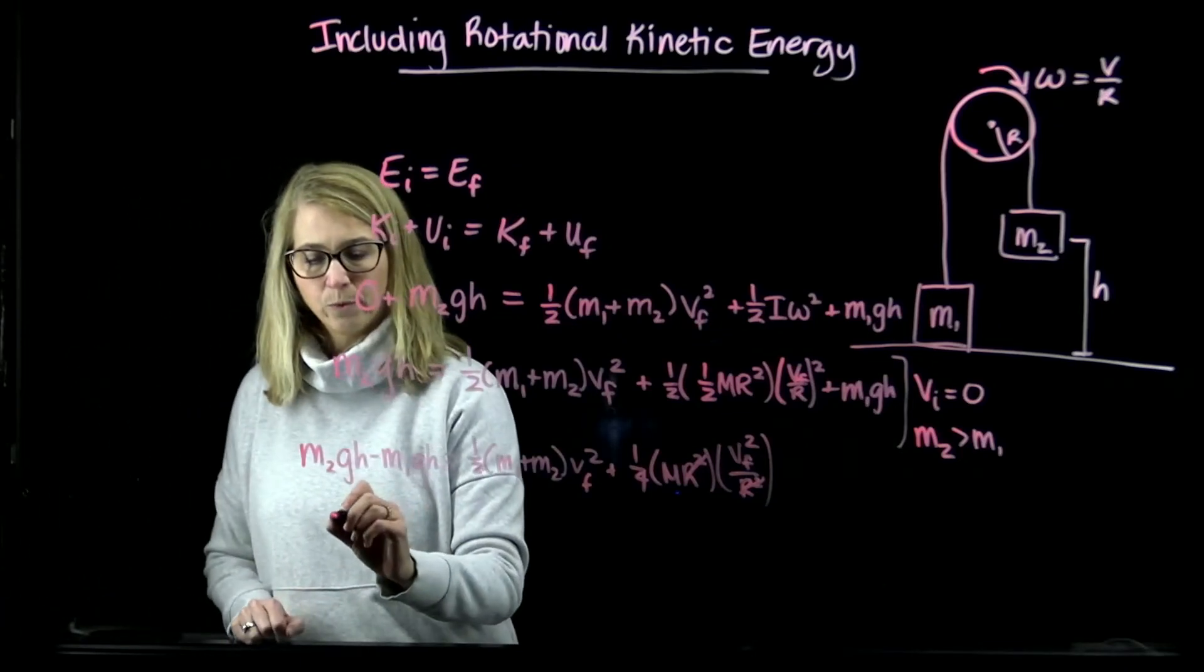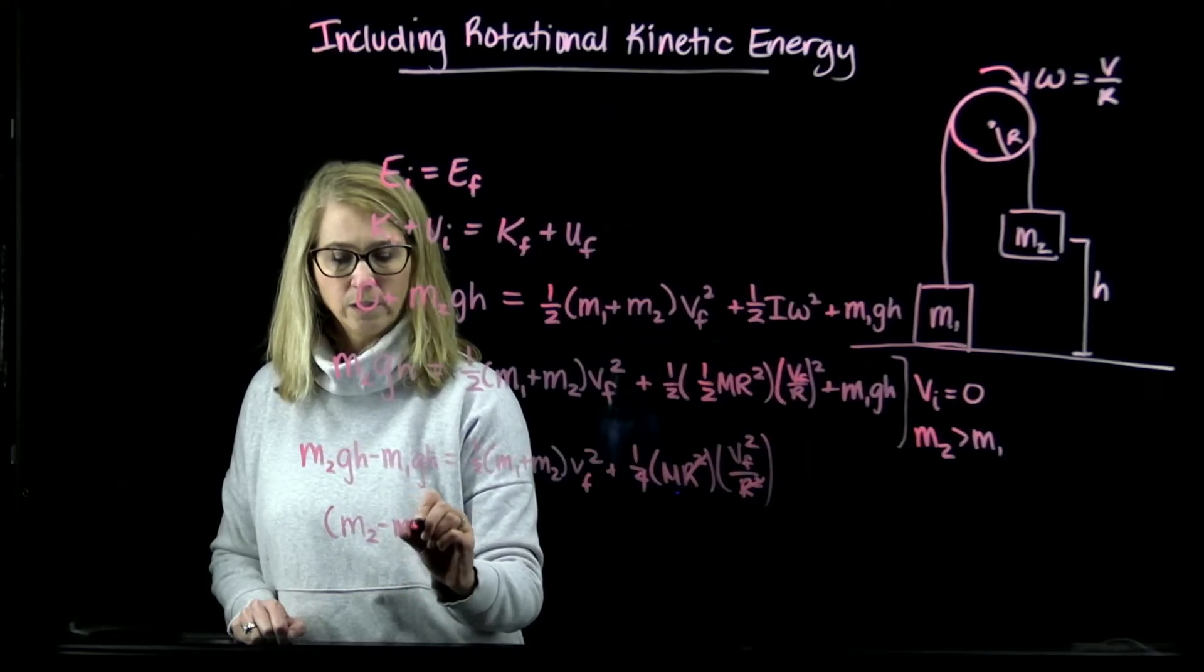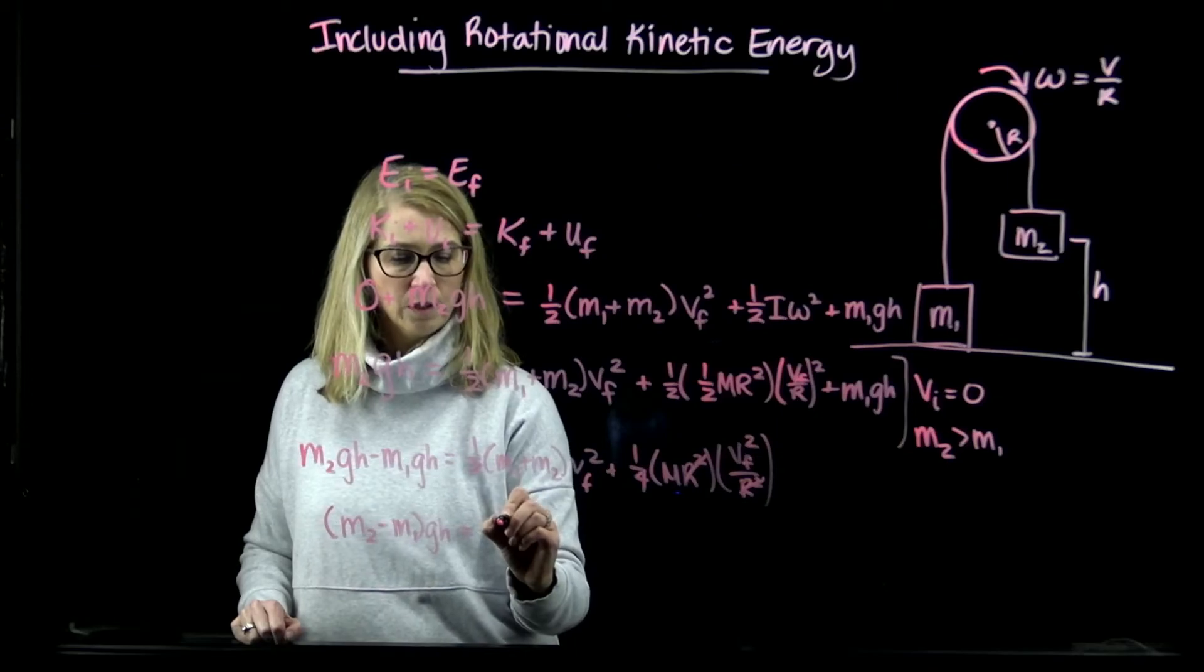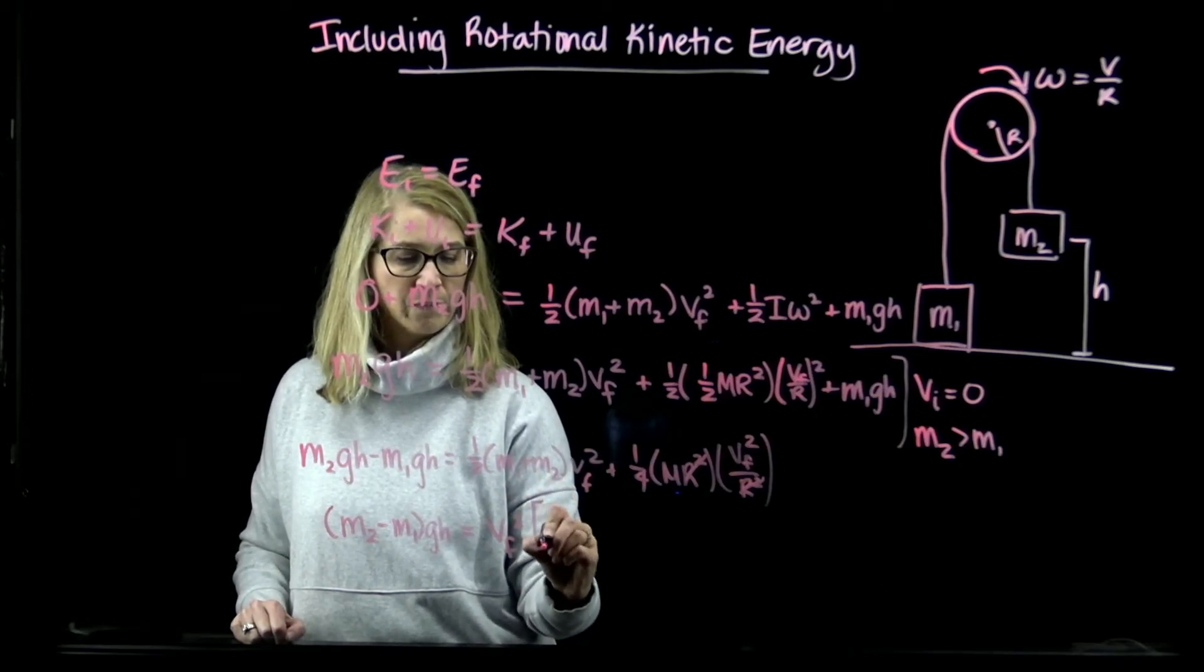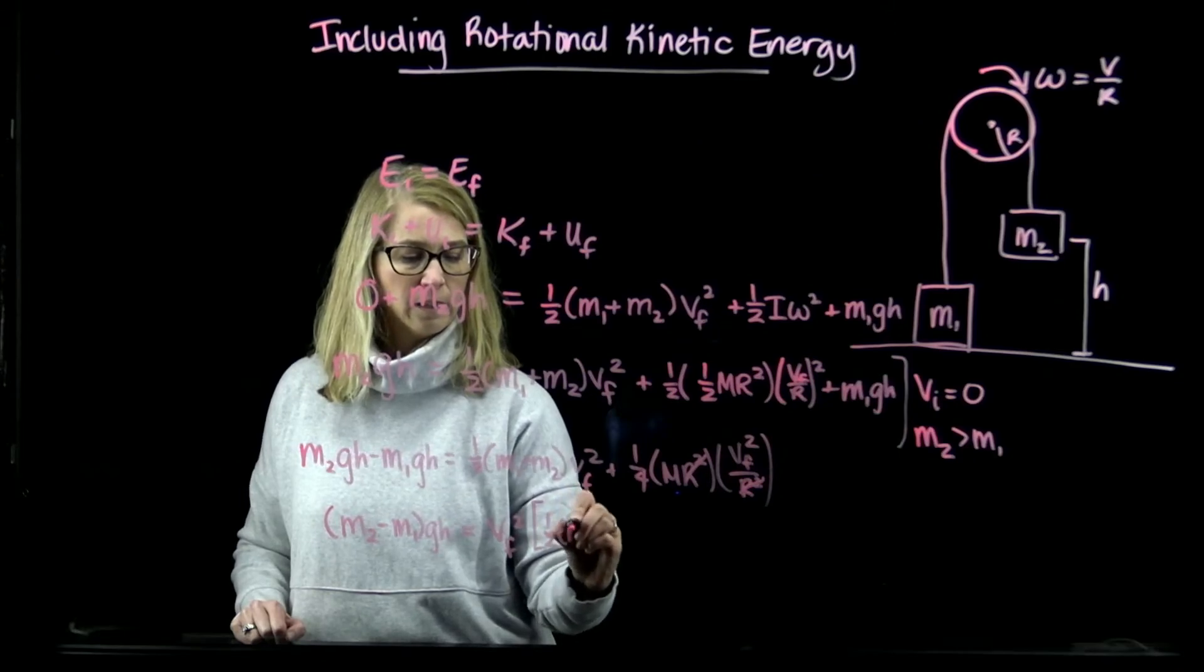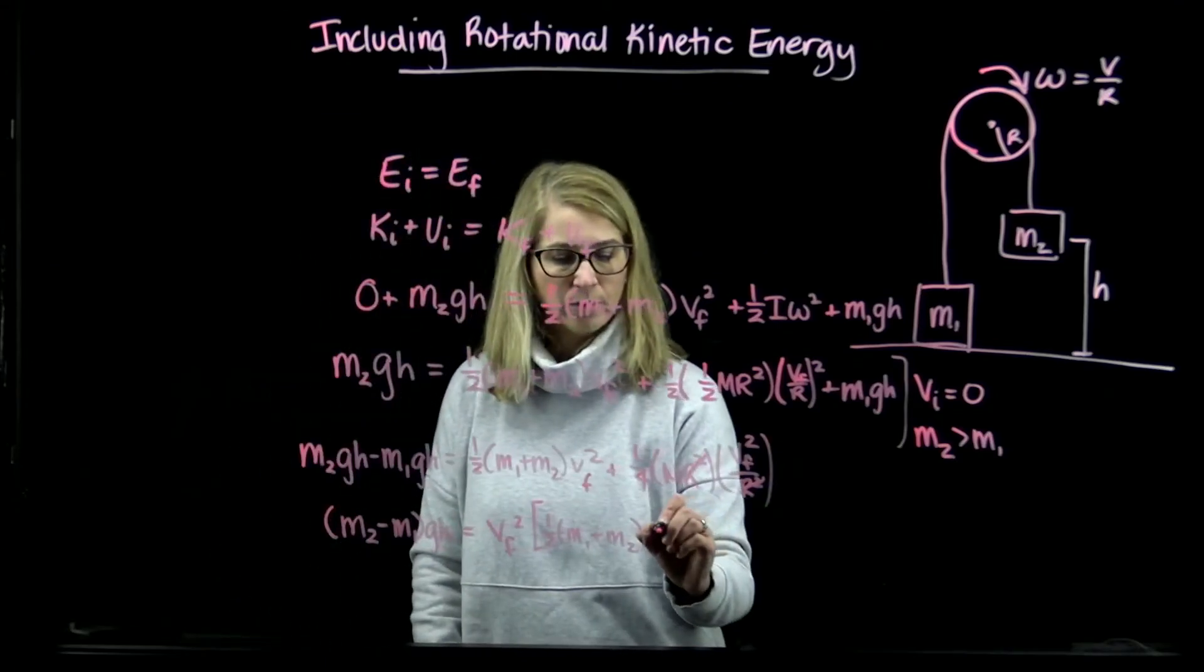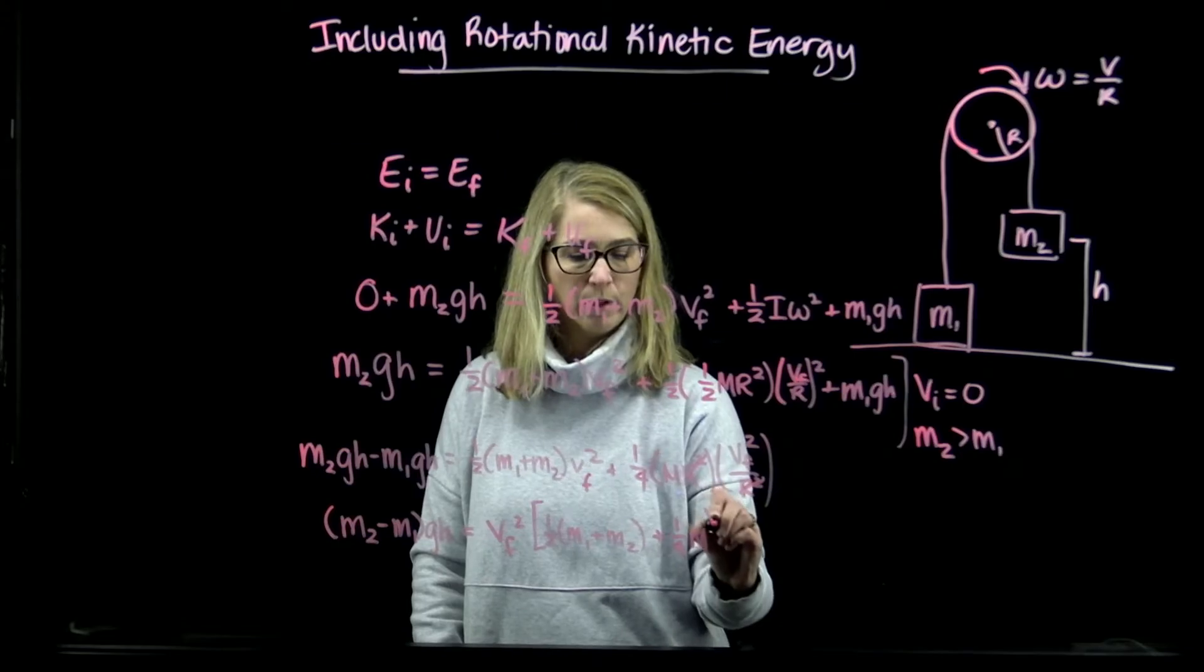Let's again factor out a little bit more. (m2-m1)gh is equal to, and then I'm going to factor out the vf², I'm going to get 1/2(m1+m2) and then also 1/4 of the mass of the pulley.